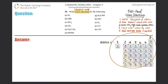Lewis structures will always focus on the upper right-hand corner of the periodic table. The key thing you need to know is how many valence electrons these non-metals have. Hydrogen, on the far left, has one valence electron. Groups 13 through 18 have three, four, five, six, seven, and eight valence electrons. Valence electrons are the electrons in the outermost shell of an atom.